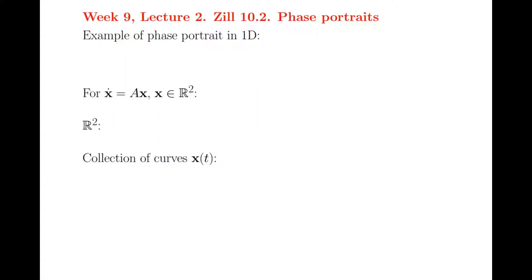We've seen the first example already in one dimension. So suppose I have x prime equals f of x, and let's take a simple example, x minus x cubed. Well, that is equal to x times 1 minus x times 1 plus x. So I see that there are fixed points when x is 0, 1, or minus 1.